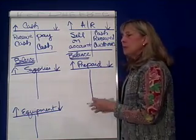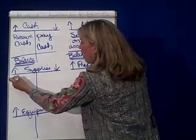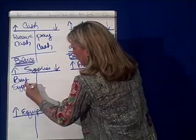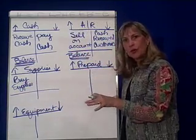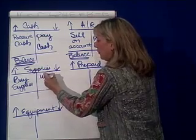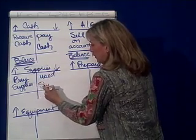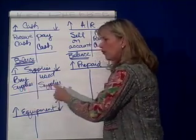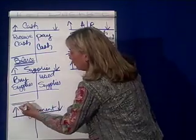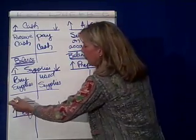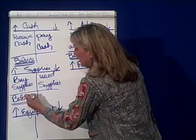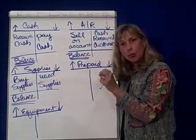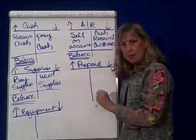Supplies. Supplies are debited or increased when you buy supplies, and supplies are reduced or credited when supplies are used. So if you've got any supplies in the supply cabinet, that means you've bought more supplies than you've used, and the normal balance you would find in supplies is a debit. Are you seeing a pattern here? If debits increase the asset accounts, the normal balances you would expect to see would be debit balances.